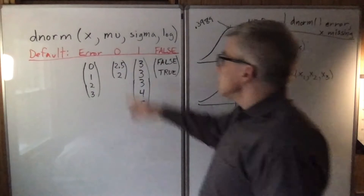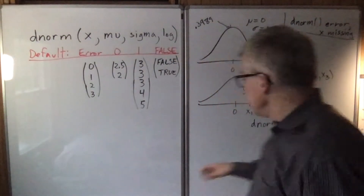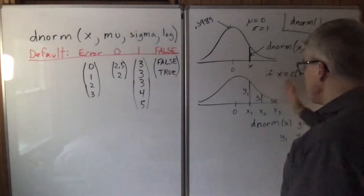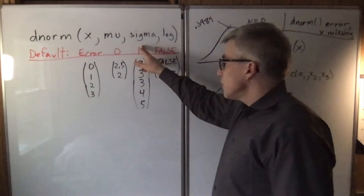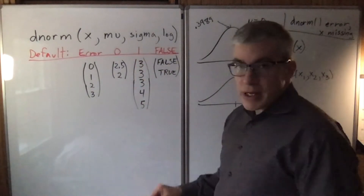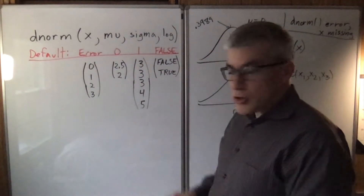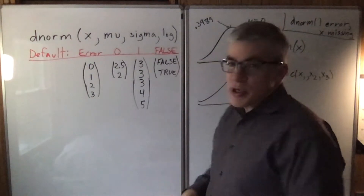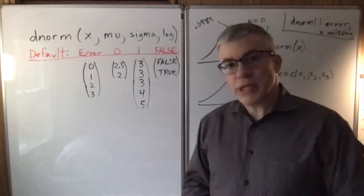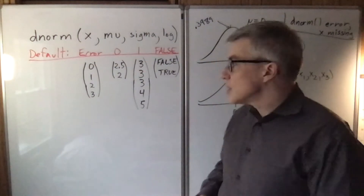The second entry, if any, is the mean — where do you want it centered. The third entry, if any, is the sigma — how wide you want the bell curve to be. And the last one is whether you would like to take the logarithm of these values.